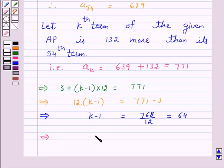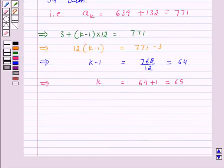This implies K equals 64 plus 1, which equals 65. Hence,